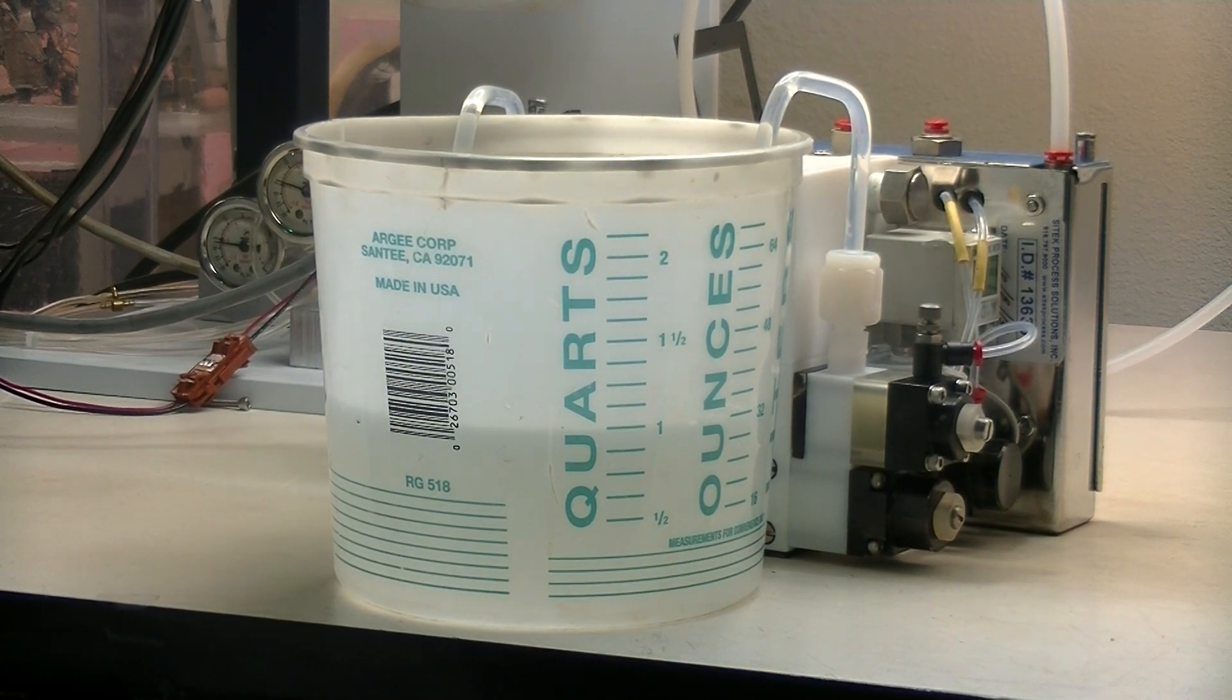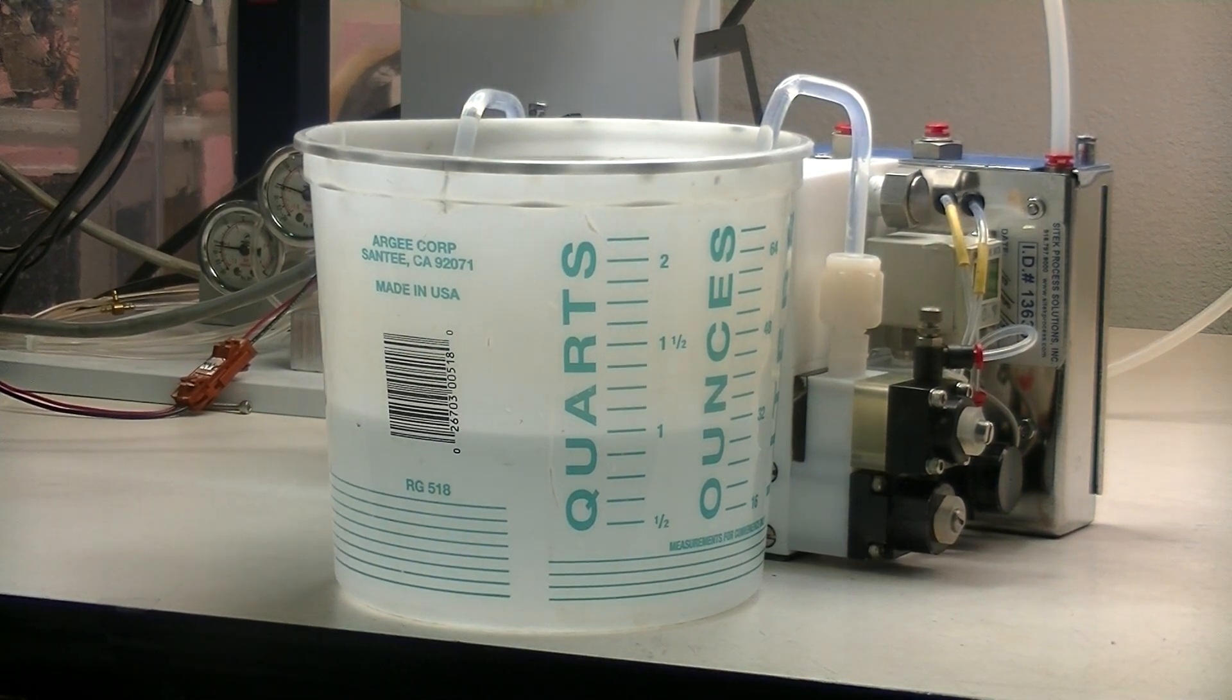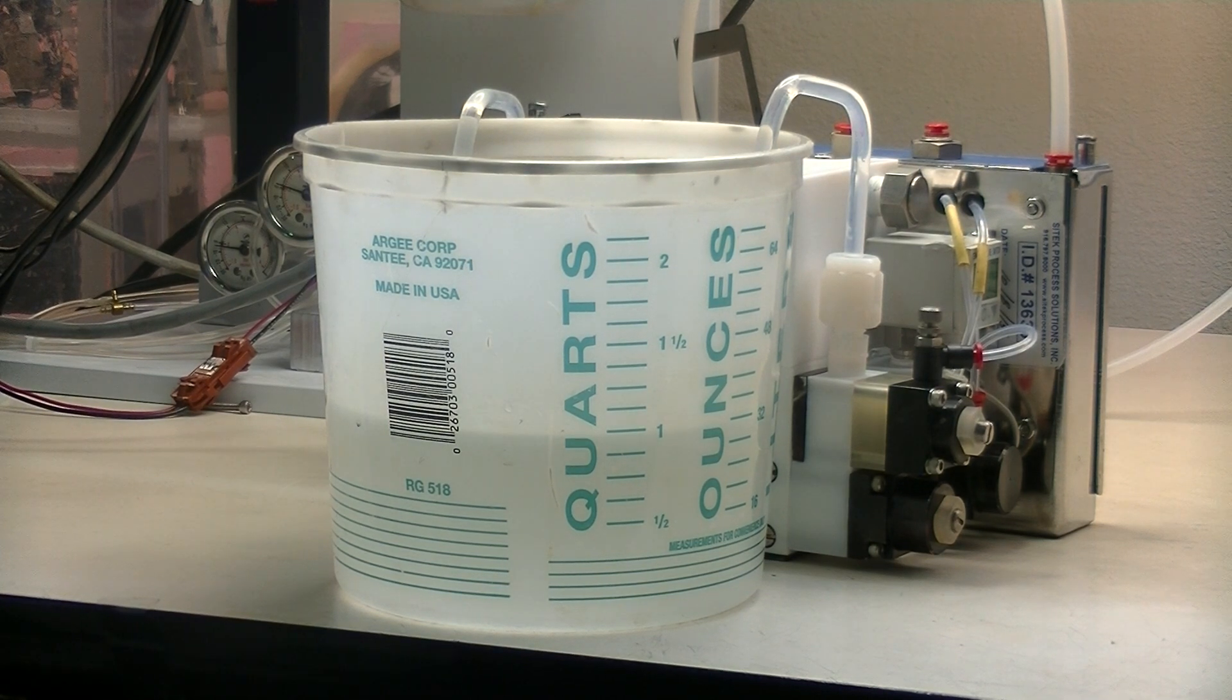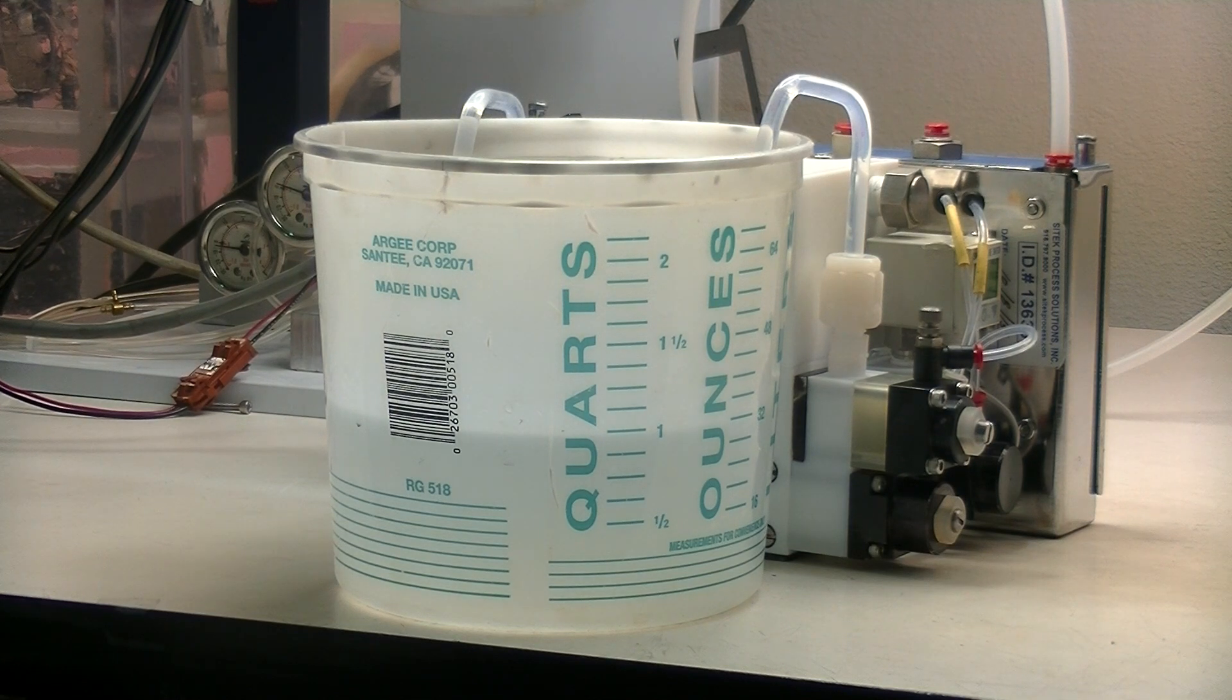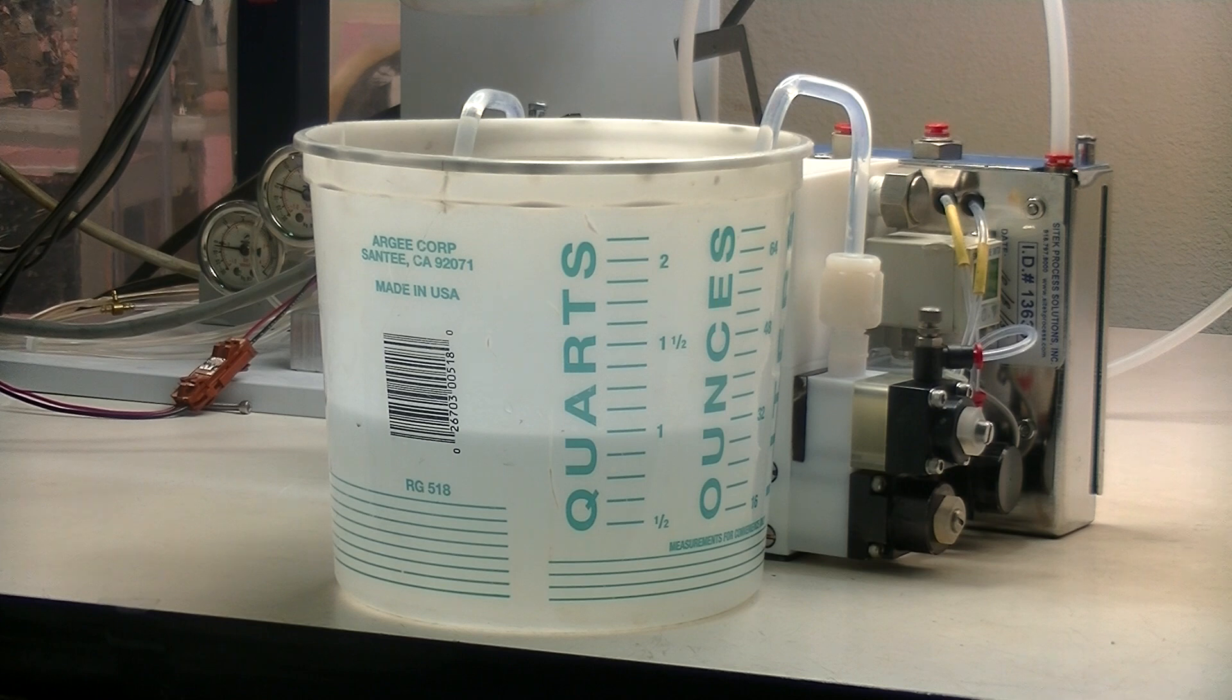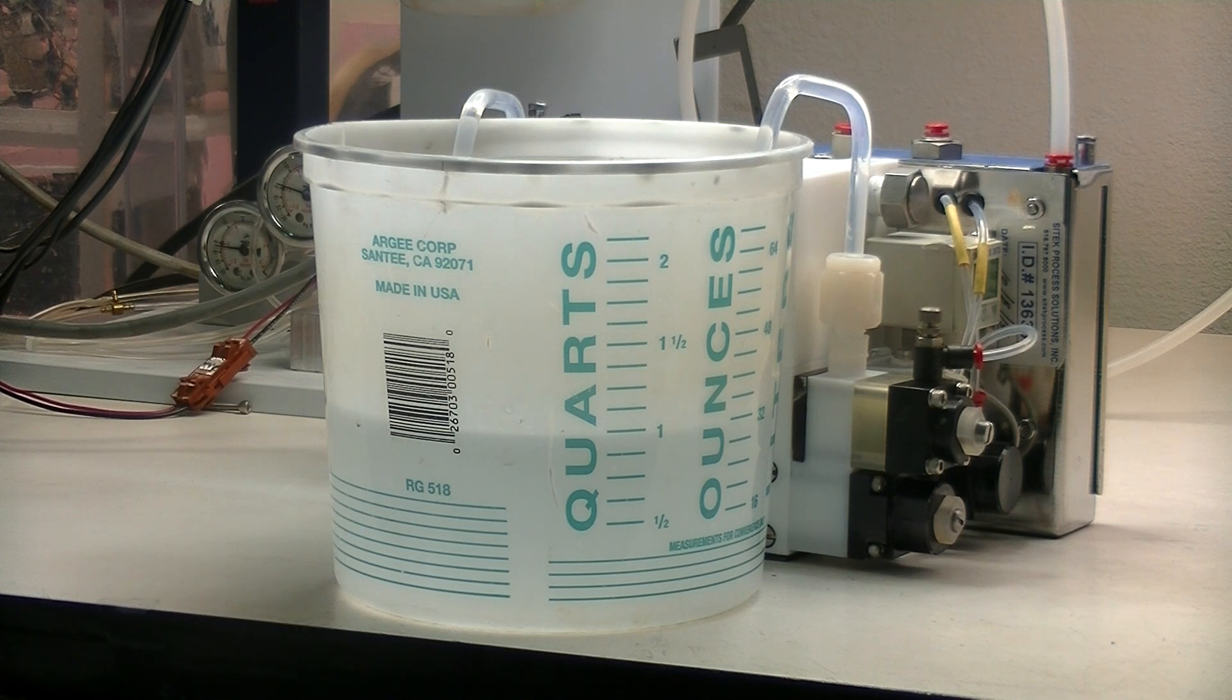There it goes. We're running 50-50 IPA and DI water. Our customer had relatively low viscosity on the resist they were running, so this is probably a relatively good test for it. We run that mixture through here because it cleans the pump out while we're doing it, keeps it clean, and when we're done, it's easy to clean up. It's just a good viable option for testing these pumps.